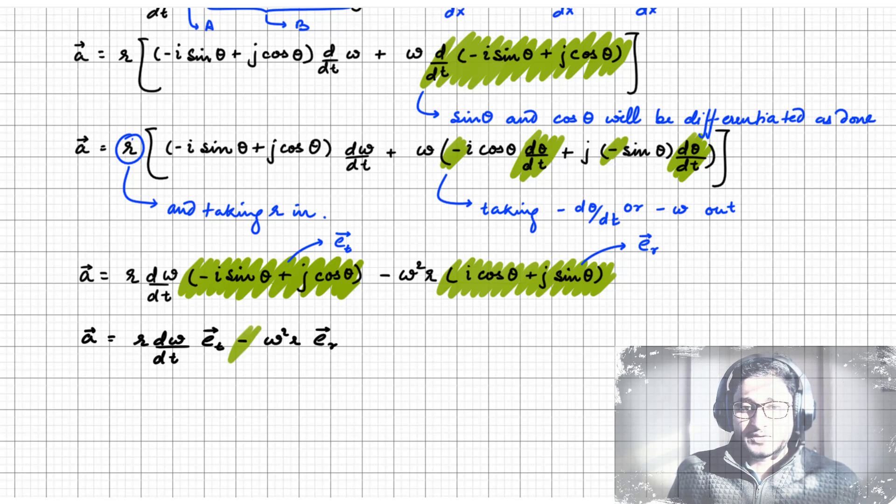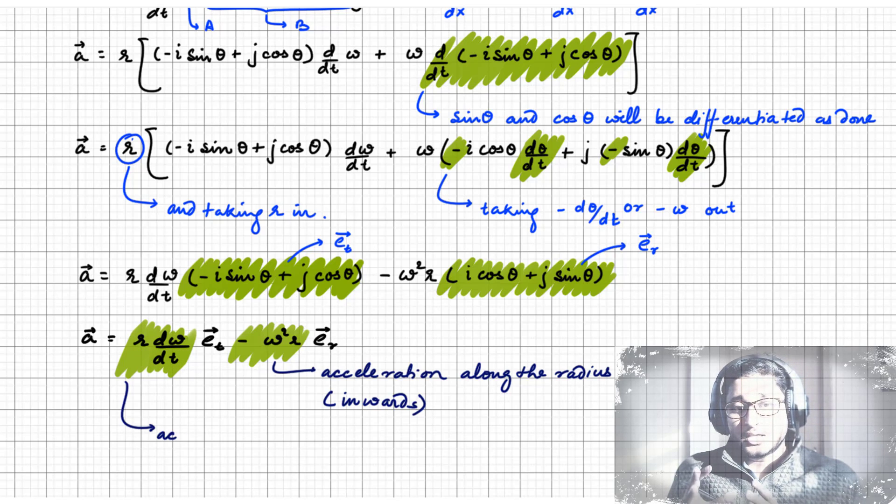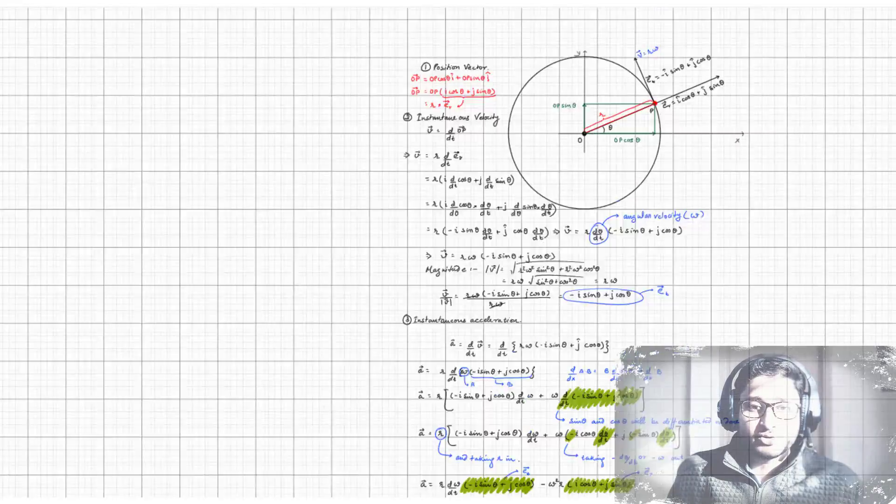The first one gives us the acceleration along the radius, but the negative sign shows us that it's inwards. And the second one gives us the acceleration in the tangential direction, since it is in the multiples of the tangential unit vector.